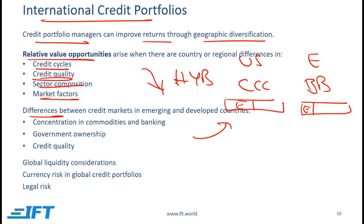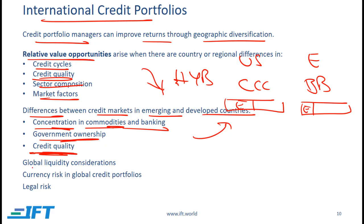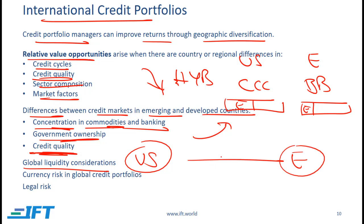We should recognize differences between credit markets in emerging and developed countries. Emerging markets are concentrated in commodities and banking; most issuers tend to have government ownership and the credit quality is generally lower than in developed markets. The US bond market is the most liquid; emerging markets are the least liquid. Currency risk in global credit portfolios can be hedged using derivatives. When investing in other countries, legal risk must also be considered — bankruptcy laws need to be understood before investing, or recovery rates can be quite low.